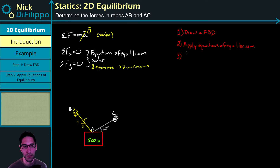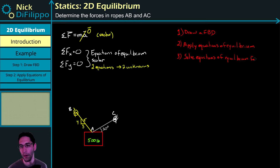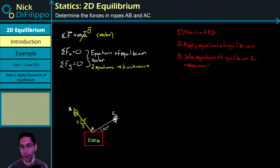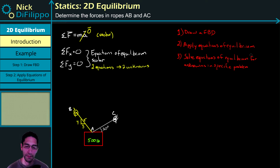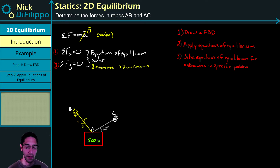Step three: we solve the equations of equilibrium for the unknown forces in the specific problem. That might mean finding force magnitudes or finding the angles the forces need to be at. What we're doing is solving the two equations — the ΣFx = 0 equation and the ΣFy = 0 equation — together simultaneously.